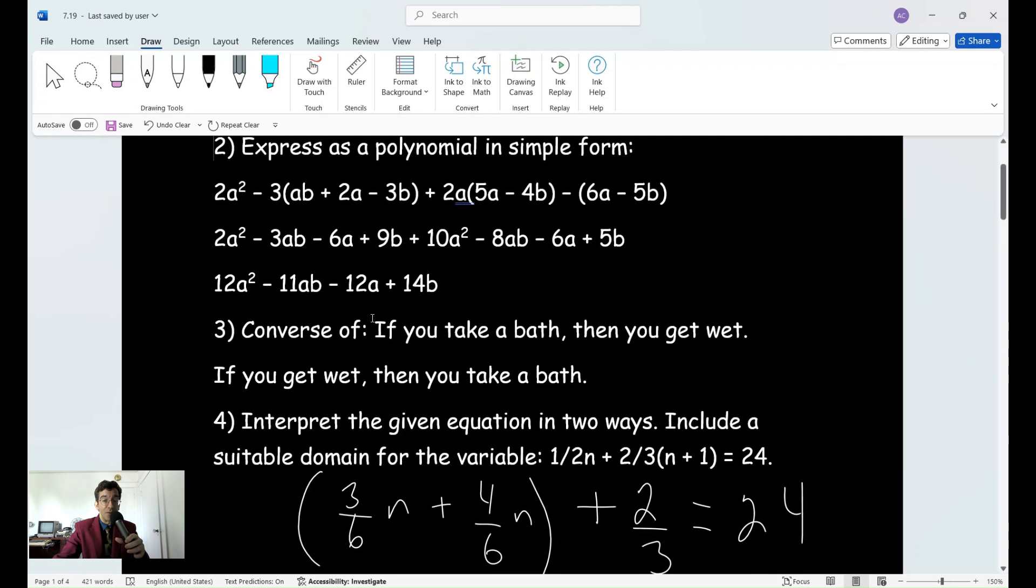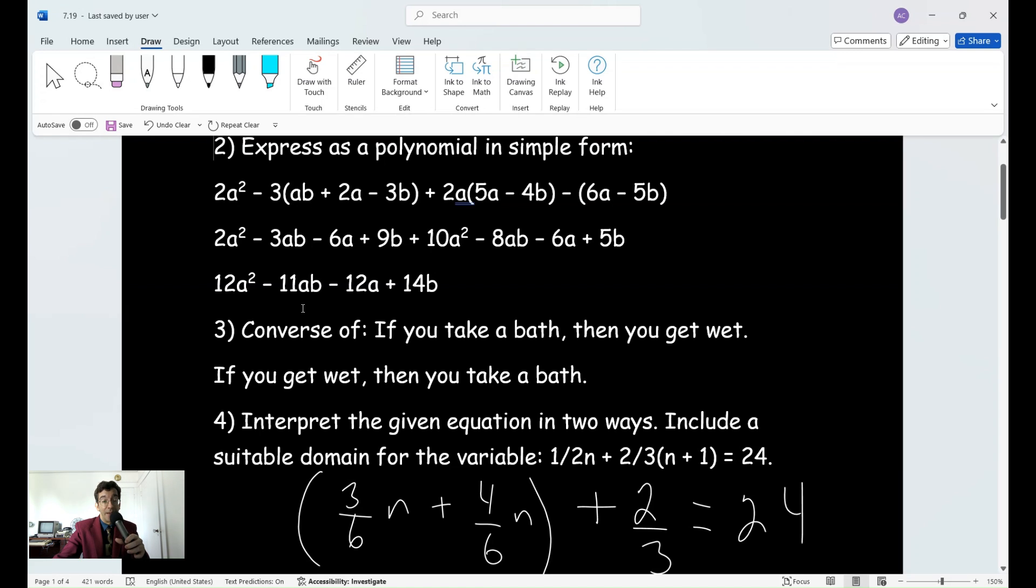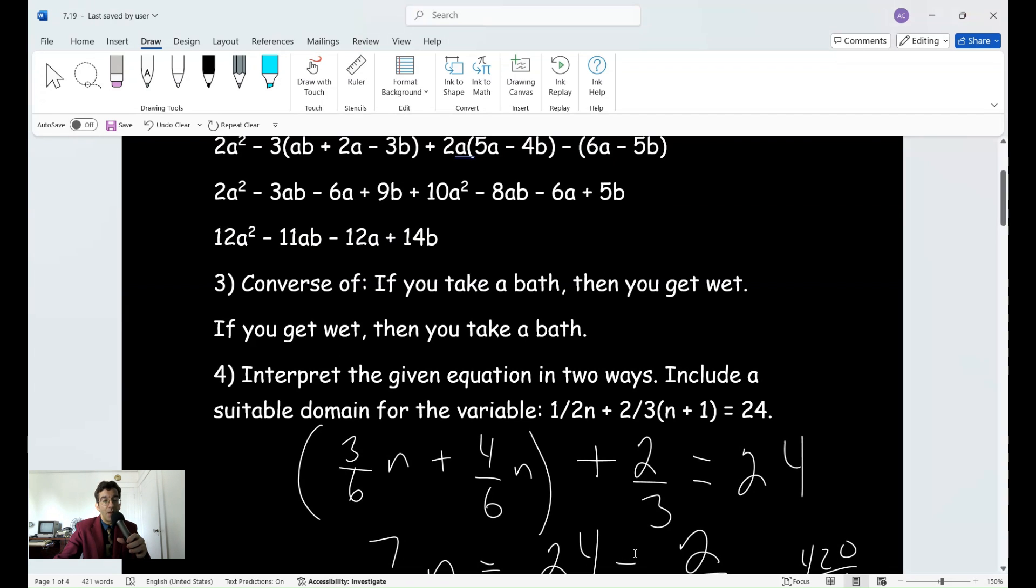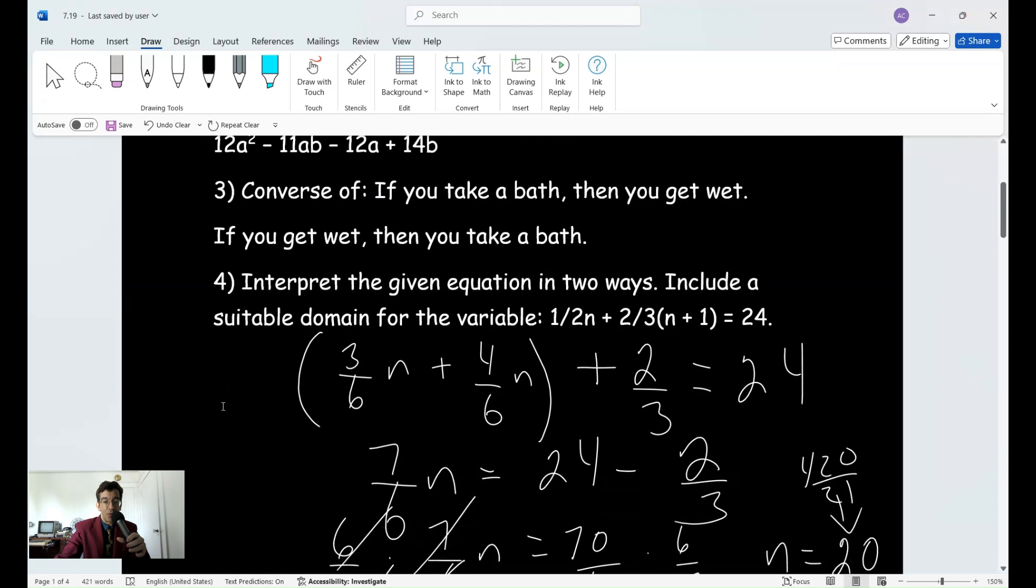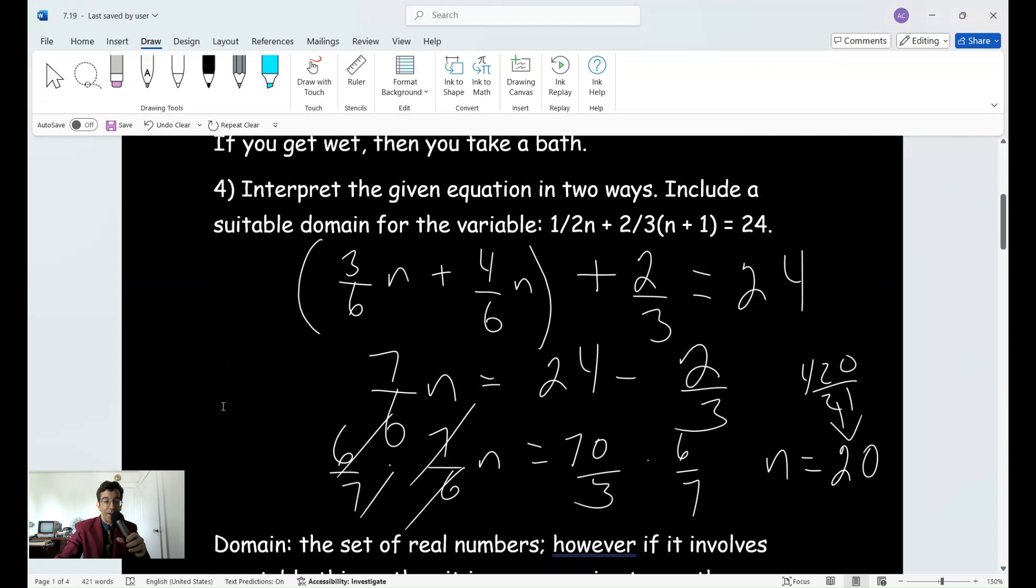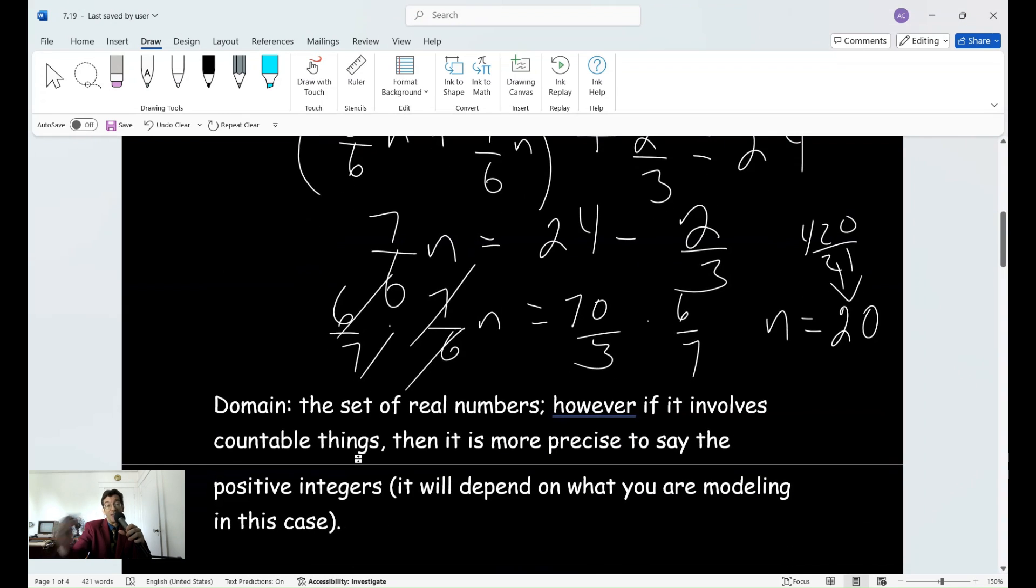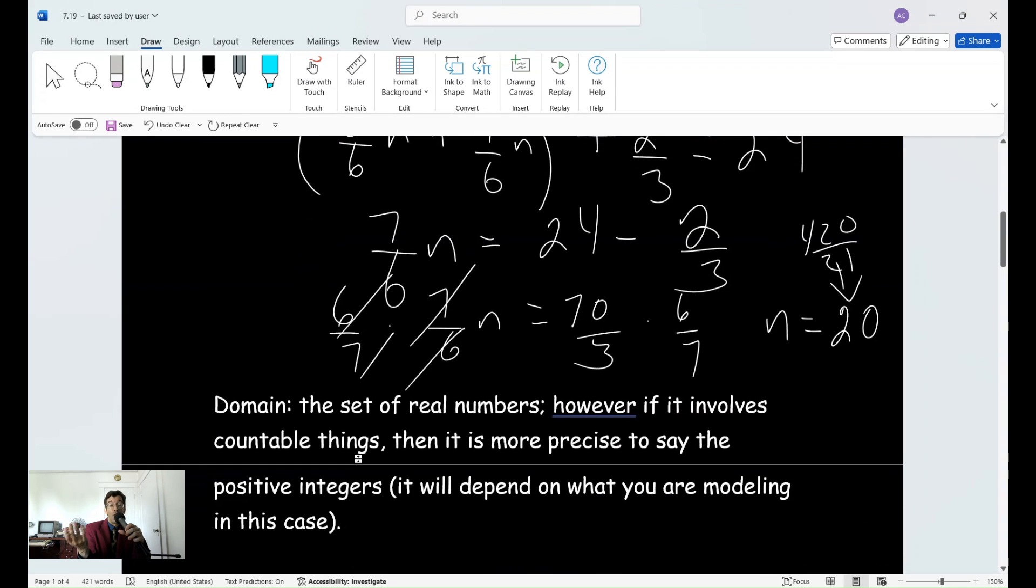Number three, the converse of if you take a bath, then you get wet. Well, if you get wet, then you take a bath. But they may not be necessarily true. Number four, you should have had the answer here, n equals 20. And the domain, the set of real numbers. But since it's asking you to interpret it, if it involves countable things, then it is more precise to say the positive integers. It really depends on what you are modeling in this case. But from a purely algebraic perspective, you could say the set of real numbers.